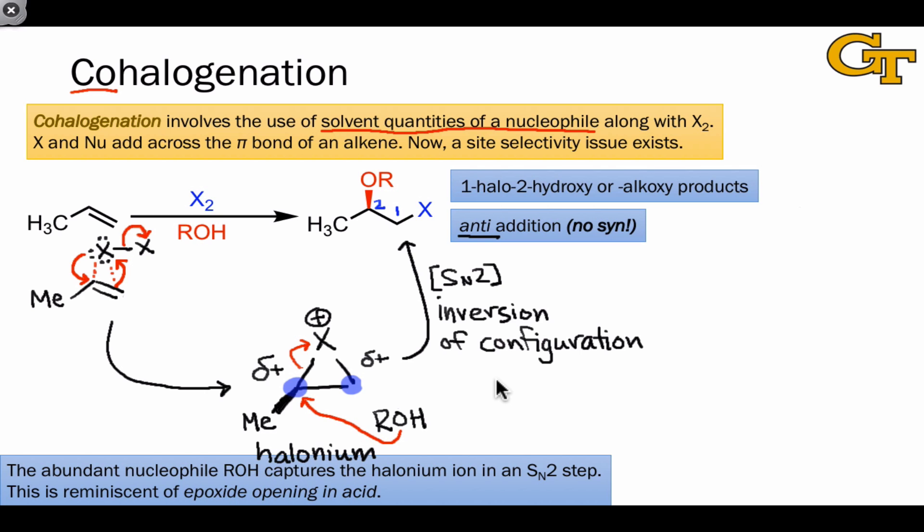In fact, the same is true if X minus is used as the nucleophile. We can't tell the difference between the products of addition to one carbon or the other because two X atoms get added in any case, but the same principle applies. The structural analogy here between X+ and OH+ in a protonated epoxide is really the key to recognizing this.